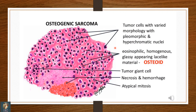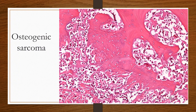Another tumor of the bone — illustrative sketch. We have tumor cells with variable morphology and pleomorphic hyperchromatic nuclei. We also have a pink lace-like material known as osteoid — it is an eosinophilic, homogenous, glass-appearing lace-like material. Areas of hemorrhage and areas of necrosis are also present. All these points direct you towards a diagnosis of osteogenic sarcoma. In the next slide, you can see osteoid pink lace-like material alongside tumor cells with hyperchromatic nuclei.